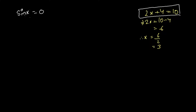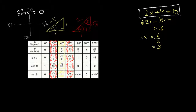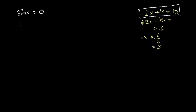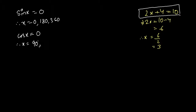Not every value of x satisfies sin x = 0 — only certain values work. From the common angles table, sin x = 0 at 0°, 180°, and 360°. So x = 0°, 180°, or 360°. Similarly, cos x = 0 at 90° and 270°. It's important to memorize these standard results. For these simple cases, you can write down the answer directly.